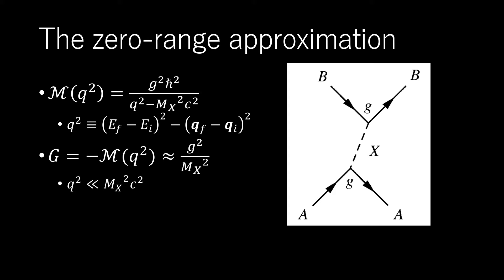This approximation is valid when the range h-bar over MxC is very small compared with the de Broglie wavelengths of all the particles involved. This implies Q-squared much less than Mx-squared C-squared, and neglecting Q-squared gives M, where the constant capital G has the dimensions of inverse energy squared.